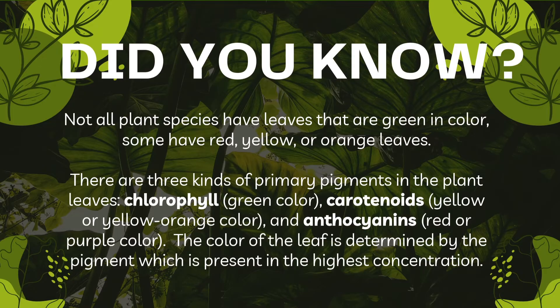Did you know that not all plants have leaves that are green in color? Some have red, yellow, or orange leaves. There are three kinds of primary pigments in plants: chlorophyll, which produces green color; carotenoids, which produce yellow or yellow-orange color; and anthocyanins, which produce red or purple color. The color of the leaf is determined by whichever pigment is present in the highest concentration.